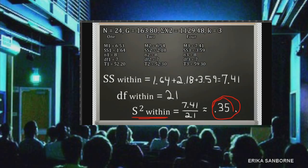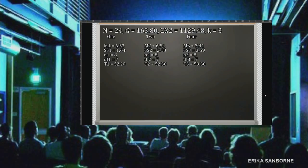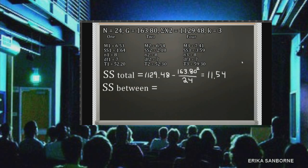And now we need to get the between groups variance, also known as mean square between. Take the between.